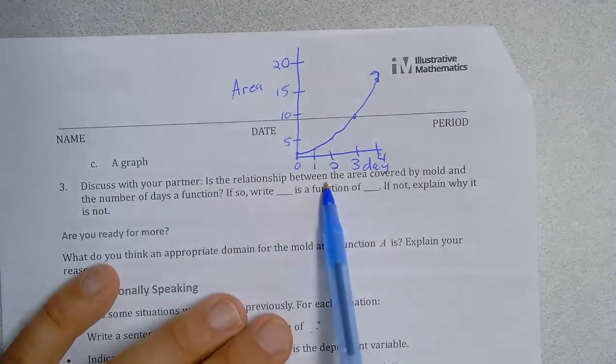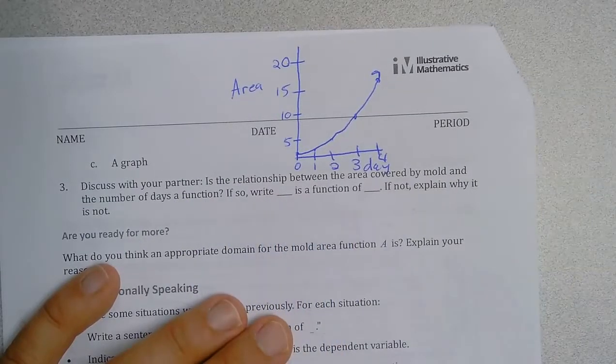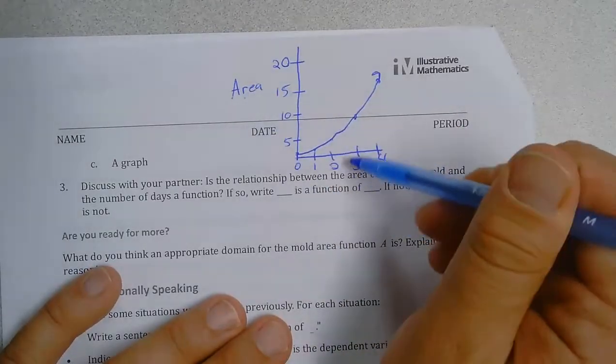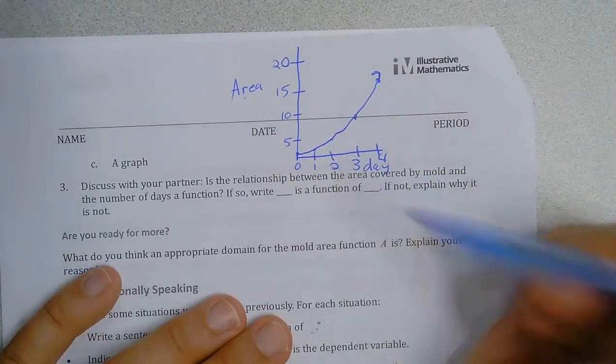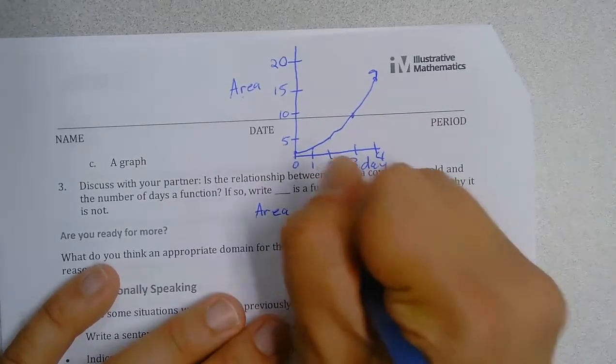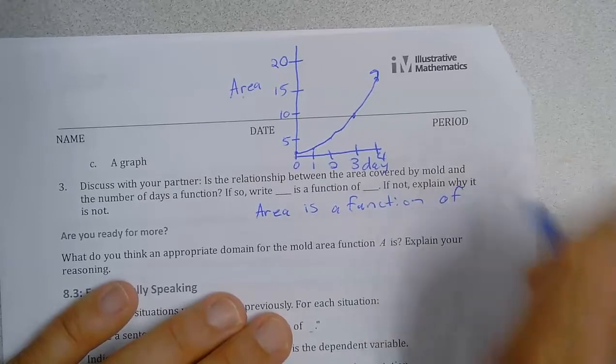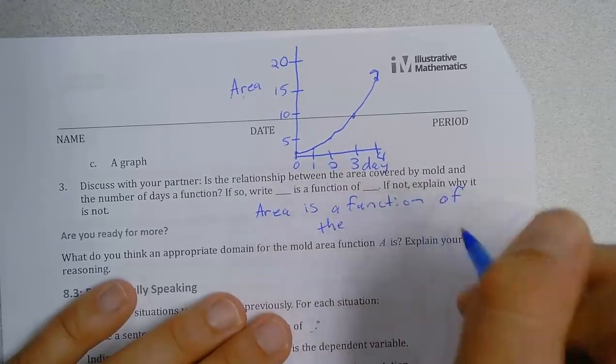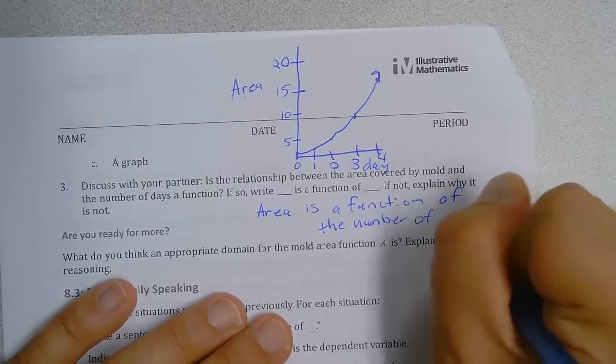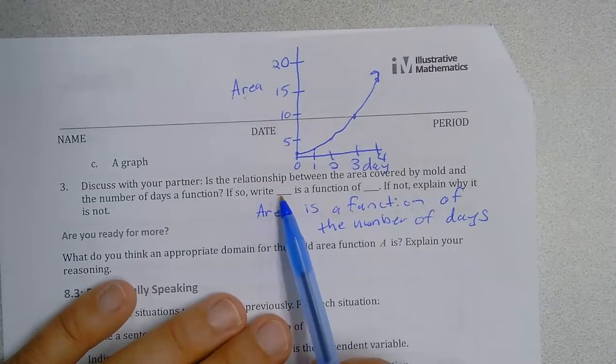So now is the relationship between the area covered by the mold and the number of days a function? So if you look at, yes, the area is a function of the number of days. So we would say that area is a function of the number of days. Again, when we say is a function of, that's our input. And then here, this would be our output.